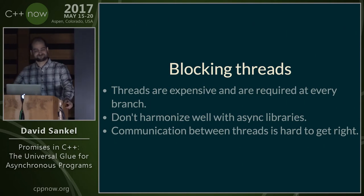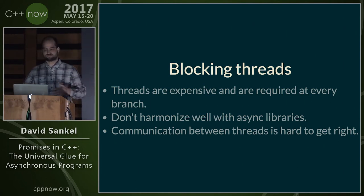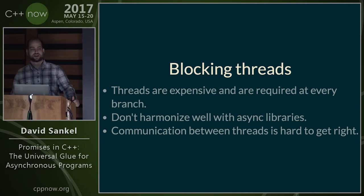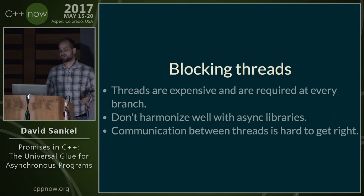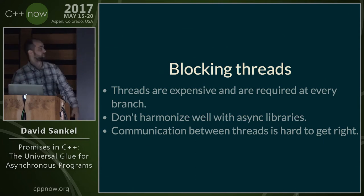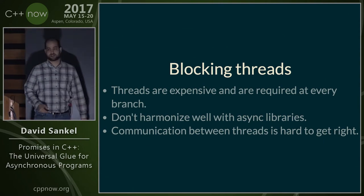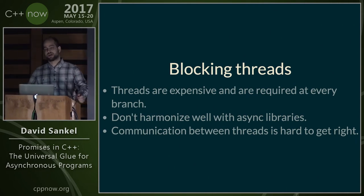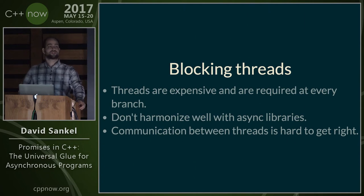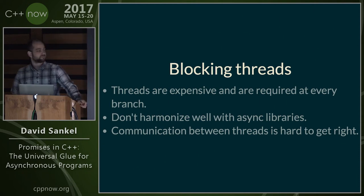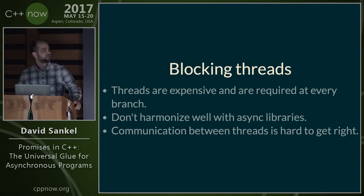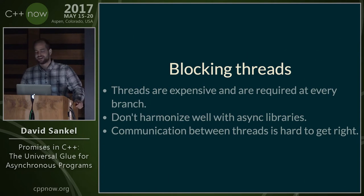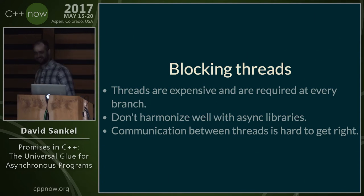Blocking threads also don't harmonize well with asynchronous libraries, which are increasingly common. More and more frequently I'm seeing libraries that don't expose a synchronous interface — they're purely asynchronous. Communication between threads is also really hard to get right. You have to use mutexes to protect data, which is a common source of very hard-to-find bugs that only happen once every million cycles. And if someone tries lock-free programming, that's just a total disaster. Don't do lock-free programming.